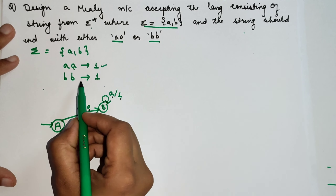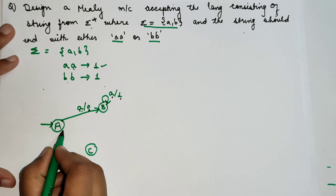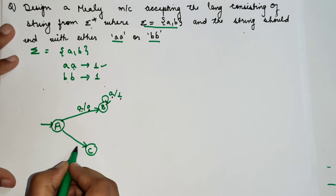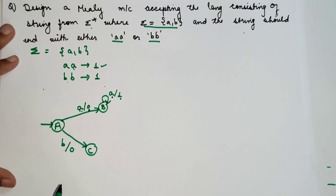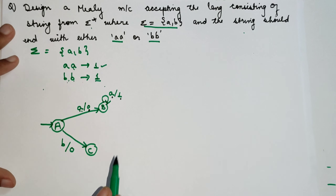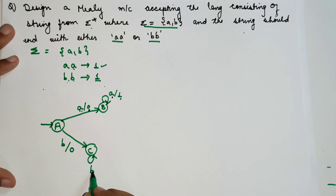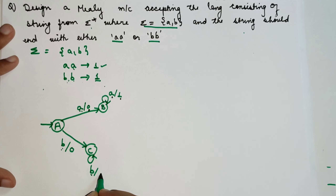Now this part is completed. Next we handle BB. We will take one more state C. Whenever we see B, it is a single B so it should produce the output 0, because we don't want a single B — we want double B. Then and then only it should produce the output 1. So we can take a self-loop here. Whenever after this B one more B is there, we can say the output produces 1.